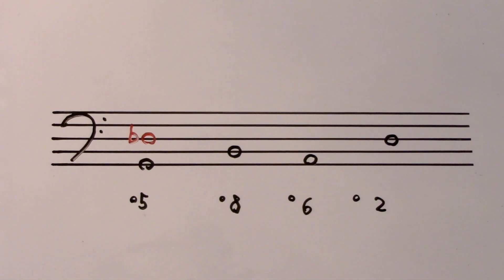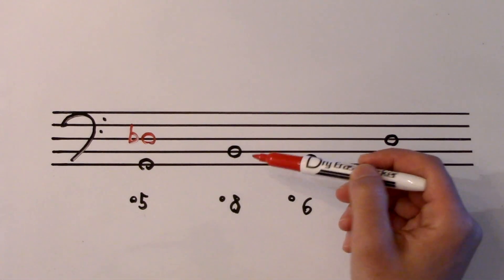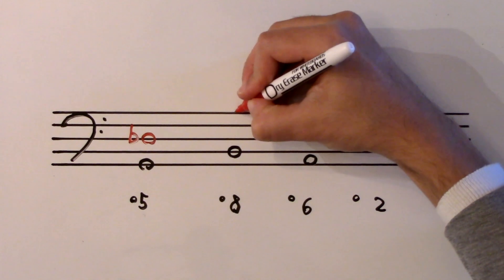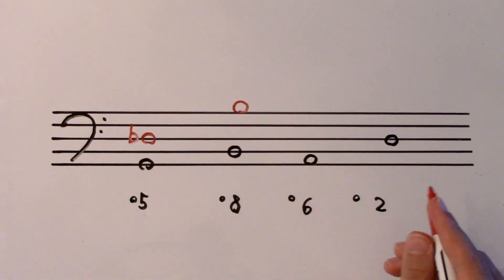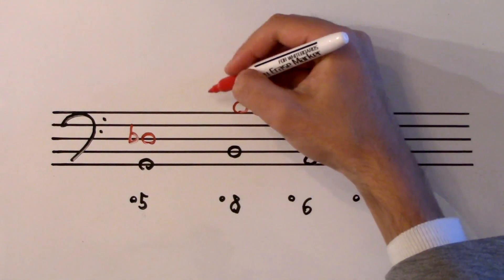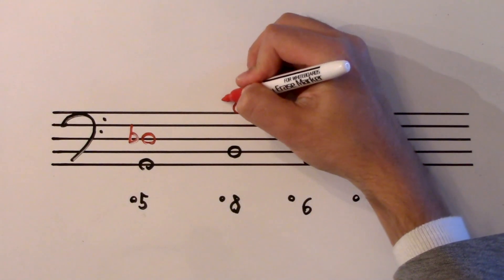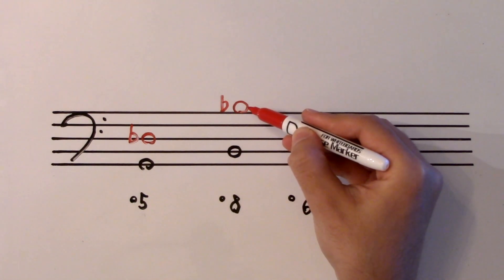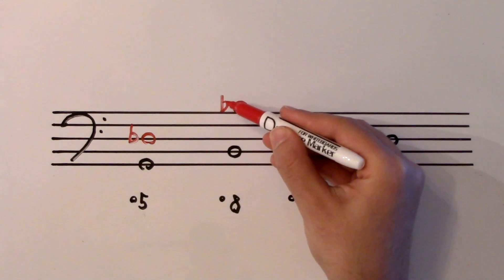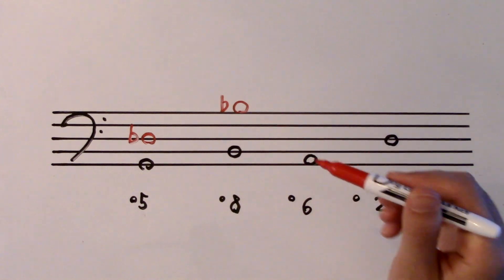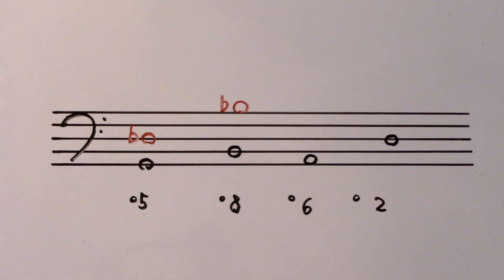A diminished eighth. An eighth above B is obviously the next B up — tonic to tonic. To shrink it, I write a flat. B to B was a perfect eighth, and now B natural to B flat — the space has been reduced. It's a diminished eighth.